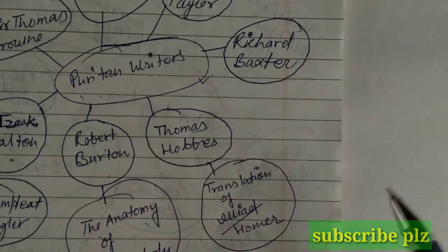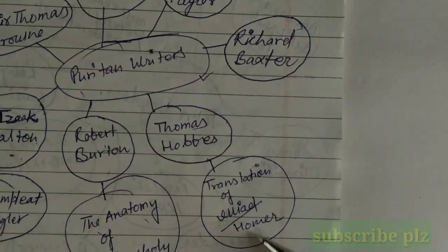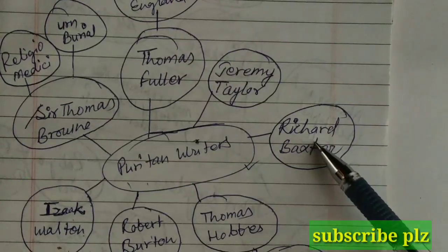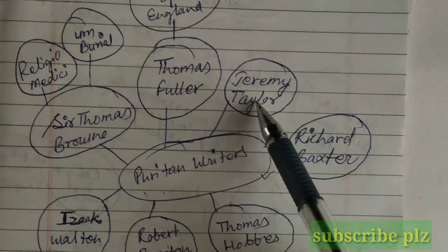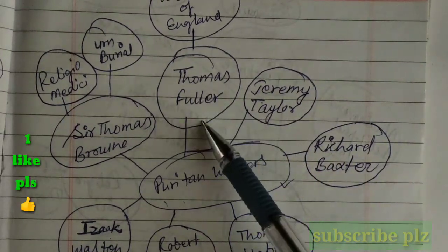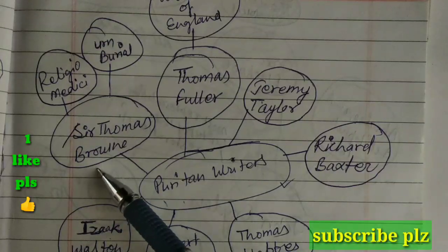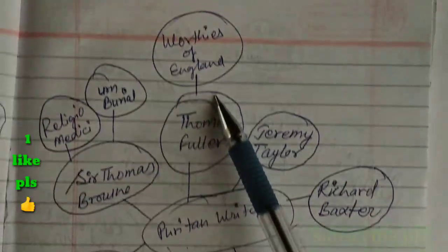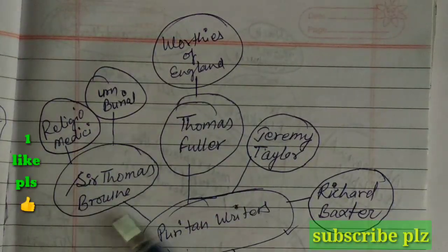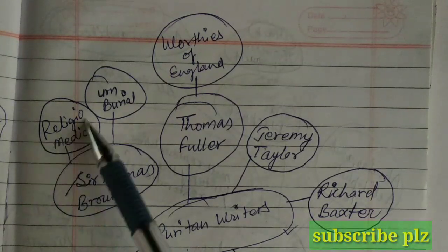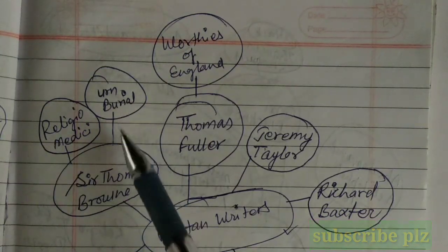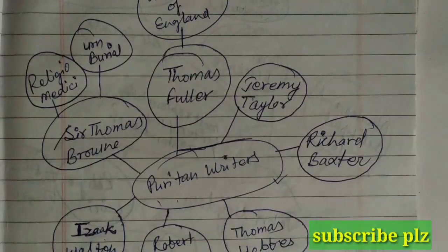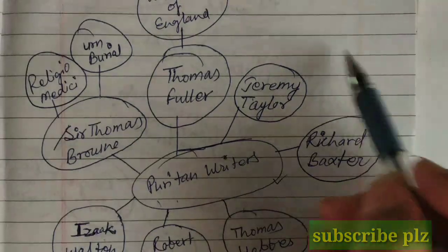Thomas Hobbes, and his best work is the translation of the Iliad and Homer. Then we have Richard Baxter, Jeremy Taylor, Thomas Fuller — who has written Worthies of England — and Sir Thomas Browne, who has written Religio Medici and Urn Burial. With the help of this video you can learn some other writers.